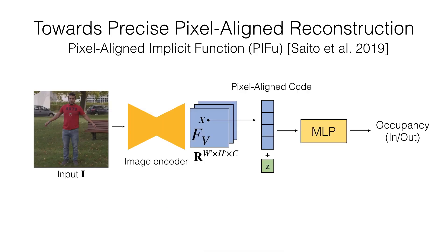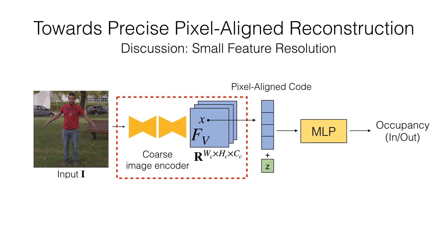However, we found that the reconstruction quality is still bounded by the feature resolution of an image encoder. The original PyFu implementation utilized an image encoder that has a down-sampling operation to keep the spatial resolution small for the following reasons.